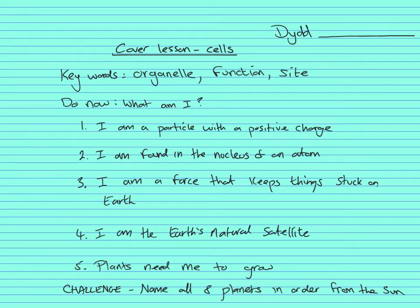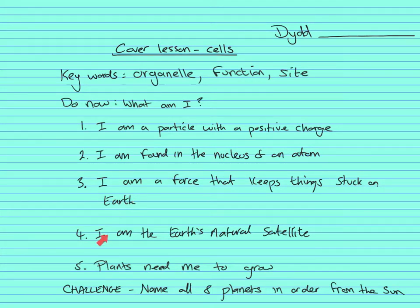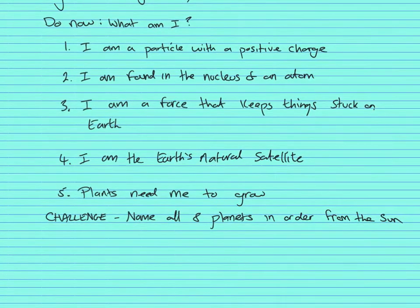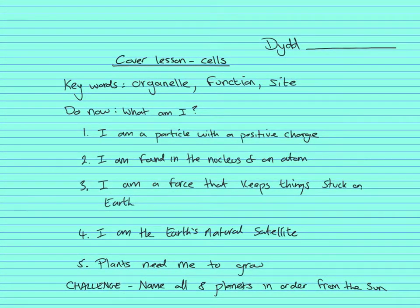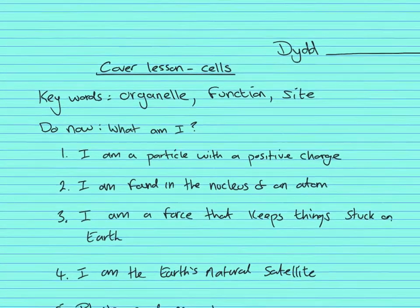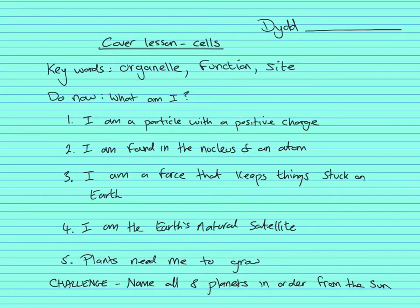You're going to complete this 'do now' activity — these are standard questions in science we should know from Key Stage 2 and Key Stage 3. First question: I am a particle with a positive charge, found in the nucleus of an atom. I am a force that keeps things stuck on Earth. I am the Earth's natural satellite. Plants need me to grow. Challenge question: name all eight planets in order from the sun. Press pause and have a go at these questions.